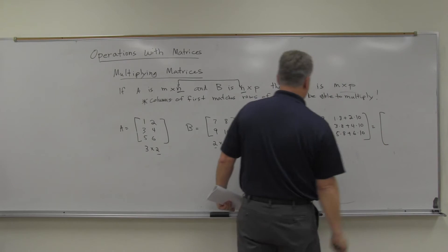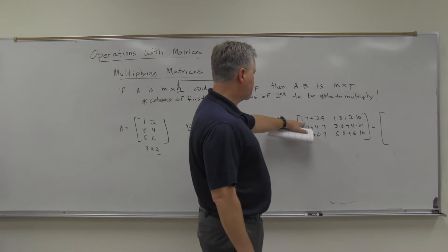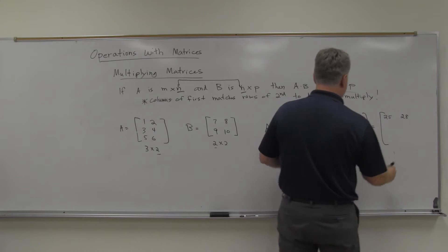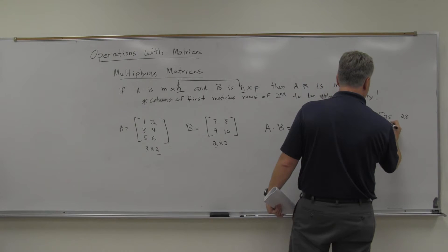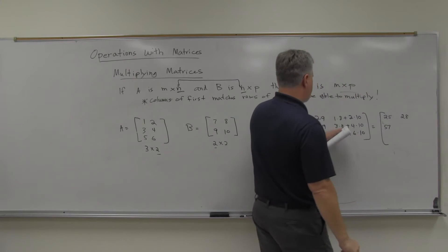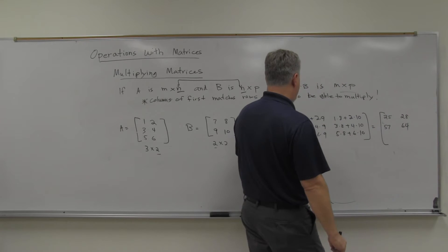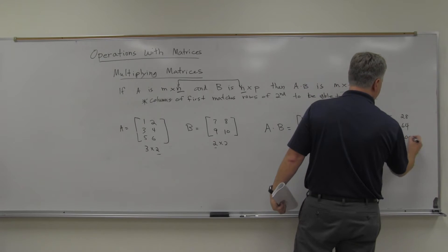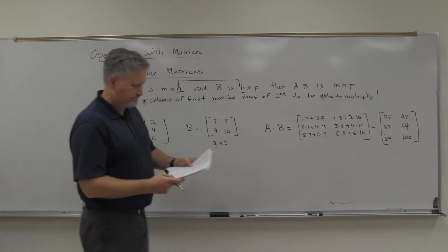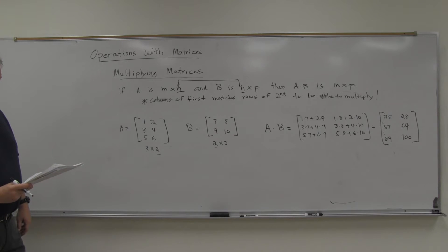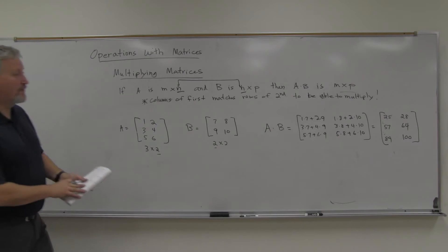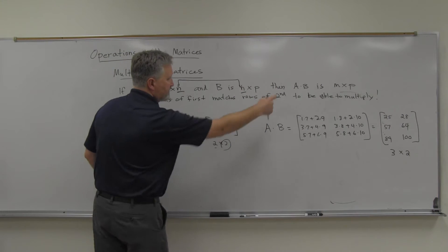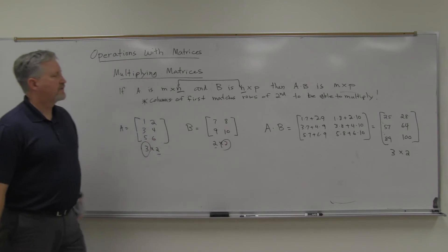Computing those: 7 plus 18 is 25, 8 plus 20 is 28; 21 plus 36 is 57, 24 plus 40 is 64; 35 plus 54 is 89, 40 plus 60 is 100. We wind up with a 3 by 2 matrix, which is exactly what the rule predicts — M by P.